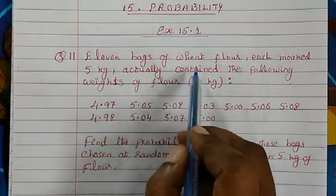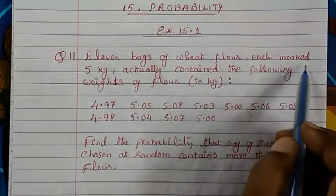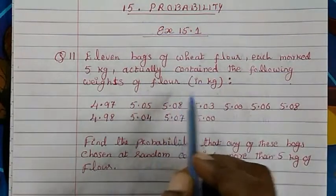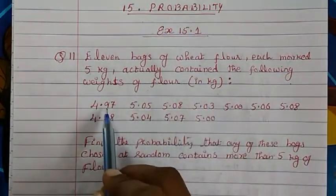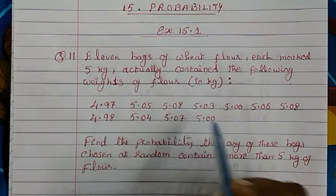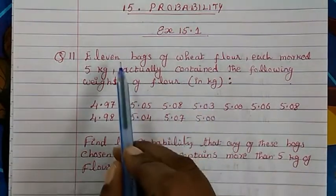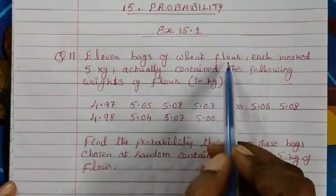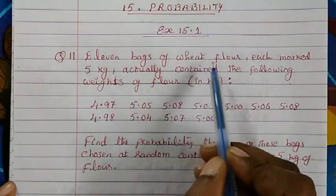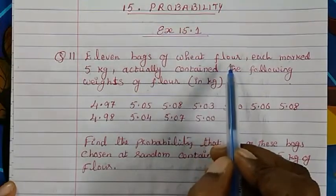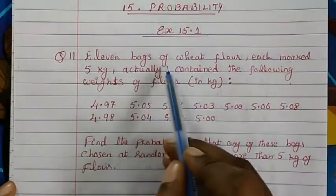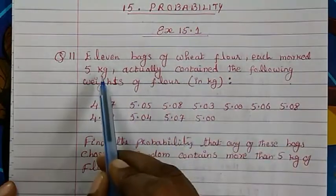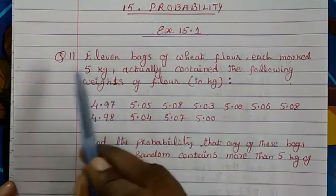11 bags of wheat flour each marked 5 kg actually contain the following weights of flour in kg. So different weights are given to us here. Try to understand the question. There are 11 bags of wheat flour. Wheat flour means we make chapati out of wheat flour.